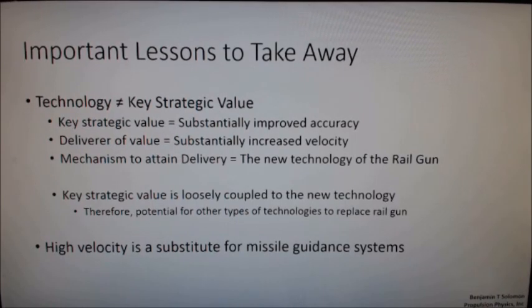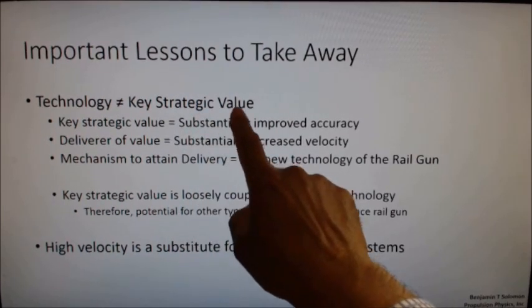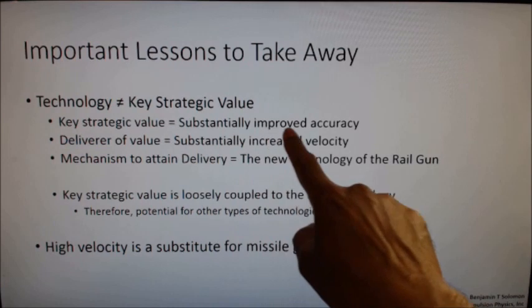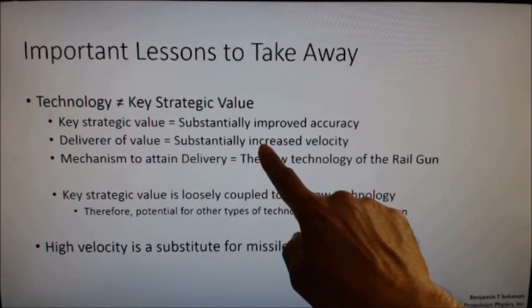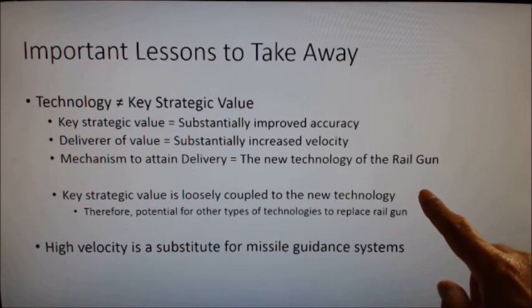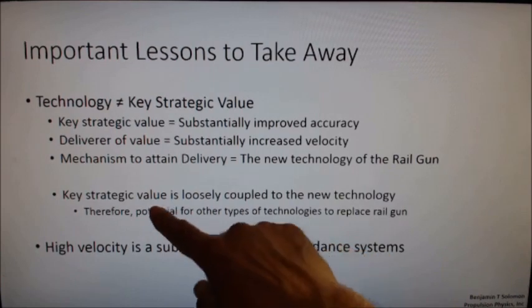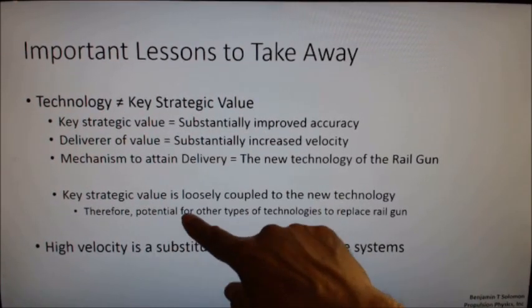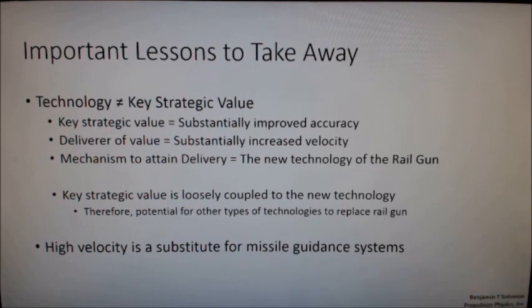So, what are the lessons we can take away from this? The first most important lesson is that technology does not equate to key strategic value. Key strategic value is the substantially improved accuracy. And the deliverer of this value for projectiles is the substantially increased velocity. And the mechanism to attain that delivery is the new technology of railgun. So, we are able to recognize this strategic value because we have a new technology of the railgun. But since this coupling is loose because it steps through several steps, we can now develop other kinds of technologies that could replace the railgun and achieve much higher velocities.